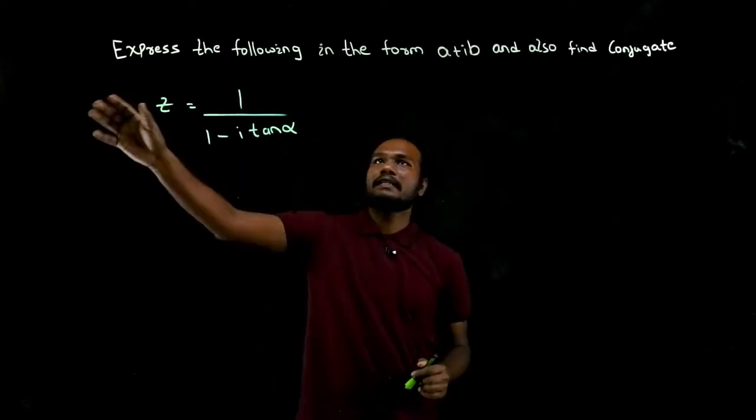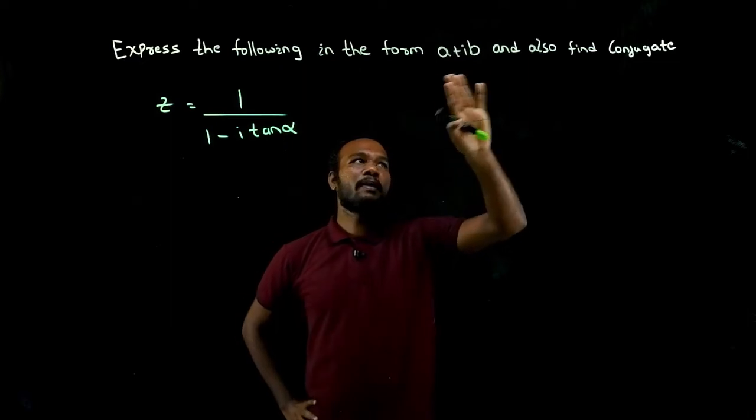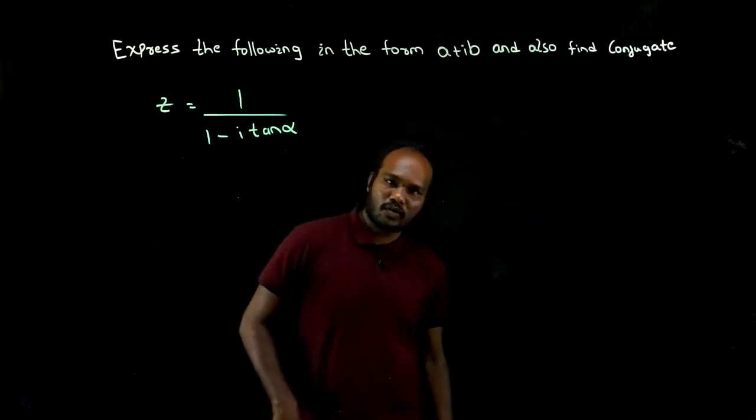Okay, what is given in the question? Express the following in the form a plus bi, and also we have to find the conjugate.